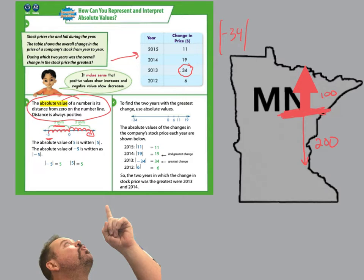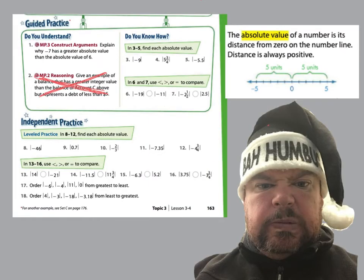You have to be careful when you're writing absolute value. Let's say we have negative 6 and I want to write the absolute value of negative 6, which equals 6. You've got to make sure you make your absolute value bars bigger than the number, otherwise it might look like 161 or 1 minus 61. So make sure you are neat and make your bars bigger than the number.